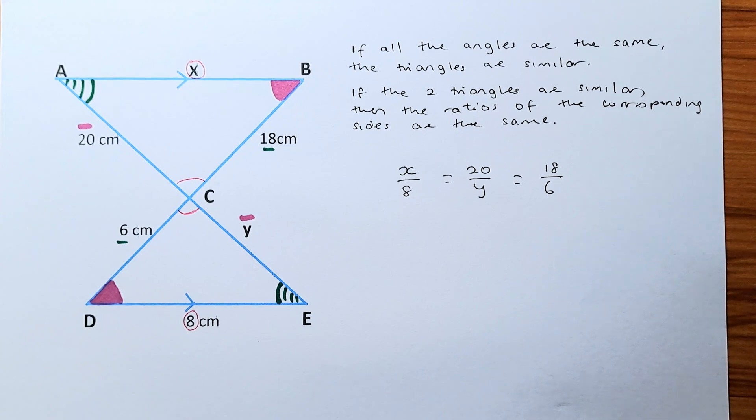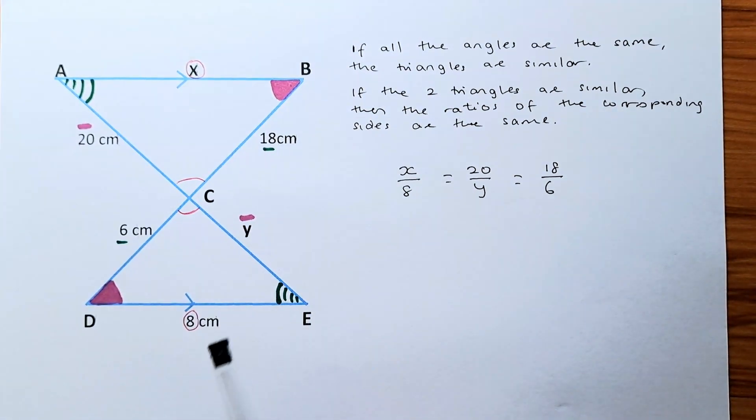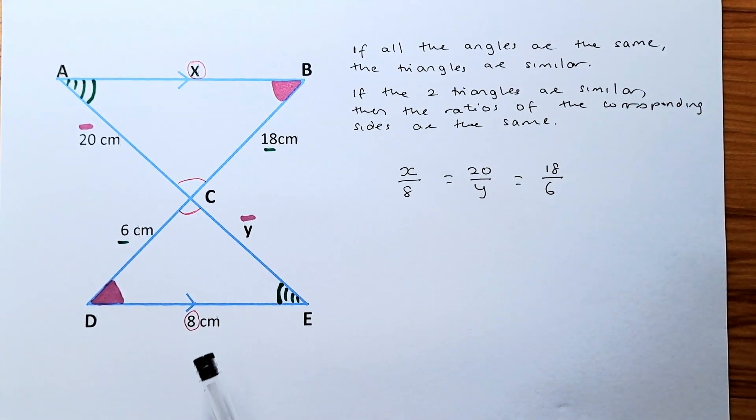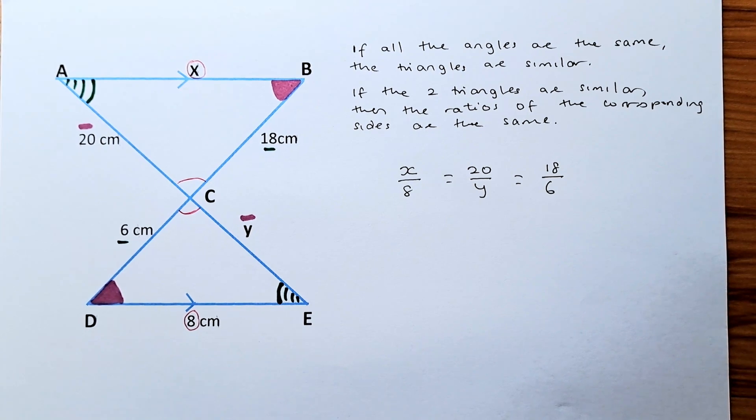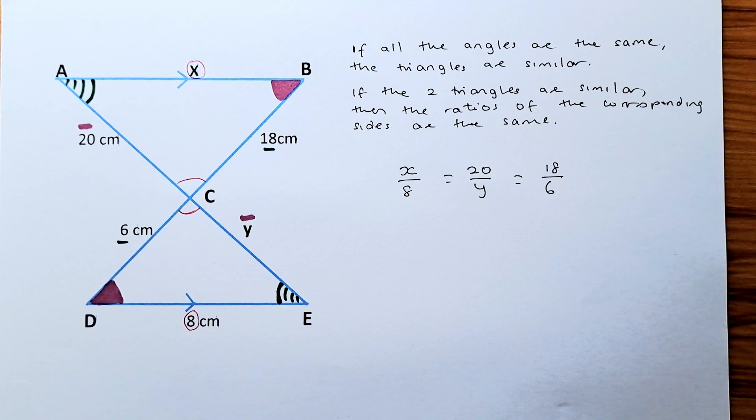First we need to know that if all the angles are the same then they are similar. So angle C are the same because they are vertically opposite angles. Angle A is the same as angle E because they are alternate angles because AB and DE are parallel. So angle A and angle E are the same, and angle B and angle D are also the same because they are alternate angles as well. So if the angles are all the same in the triangles then the triangles are similar.